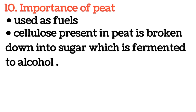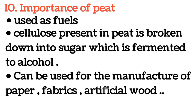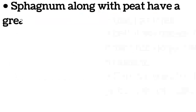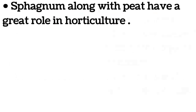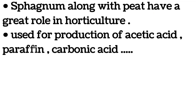Ten: importance of peat. Peat is used as fuel. Cellulose present in peat is broken down into sugar, which is fermented to alcohol. Peat can be used for the manufacture of paper, fabrics, and artificial wood. Sphagnum along with peat have a great role in horticulture and are used for production of acetic acid, paraffin, carbonic acid, etc.